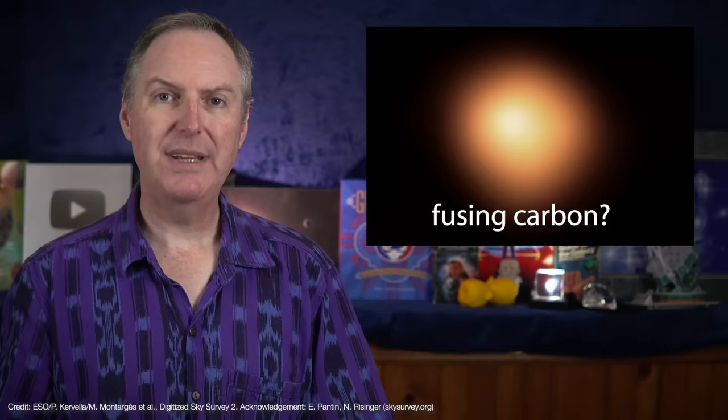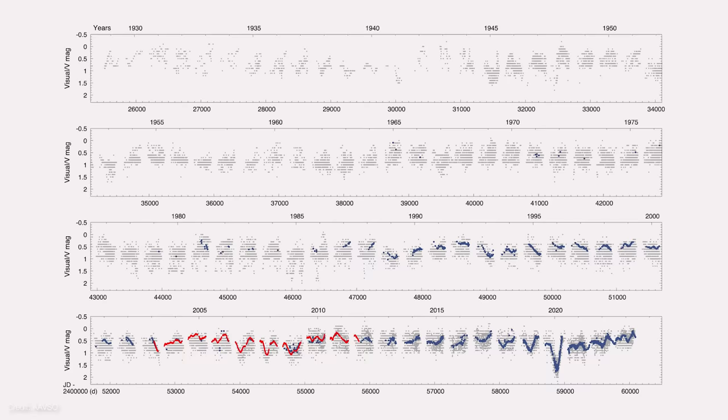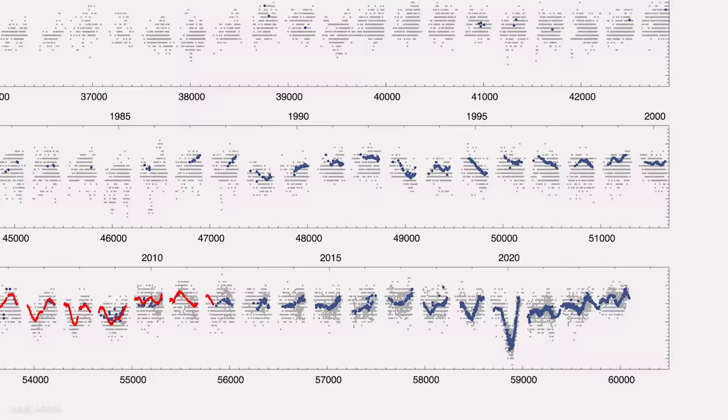The problem is we can't actually look inside to see what's going on in the core. But Betelgeuse is a pulsating variable star, and we have reliable light curves going back at least a century.